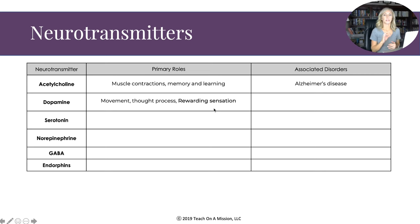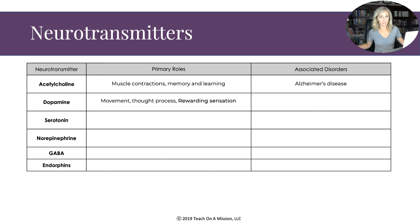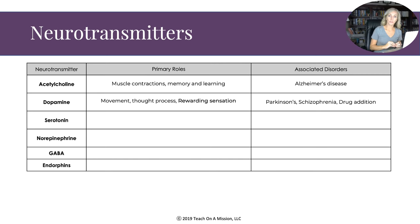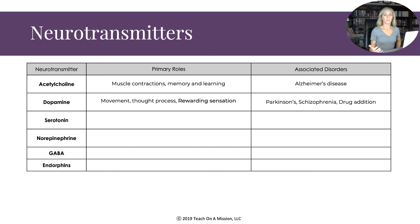Dopamine is involved in movement and thought processes, but most notably it is our naturally existing rewarding sensation. Every time you eat your favorite meal, score a goal, or get good news, you get a rush of dopamine. Too little dopamine is associated with Parkinson's disease; too much is associated with schizophrenia. Dopamine is also heavily involved in drug and other addictions.